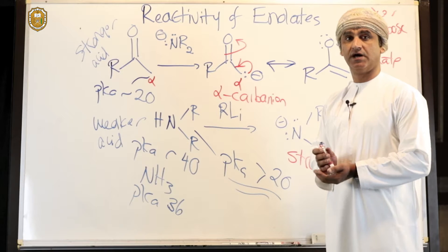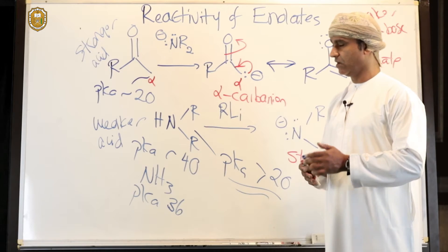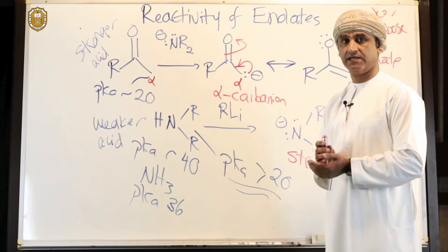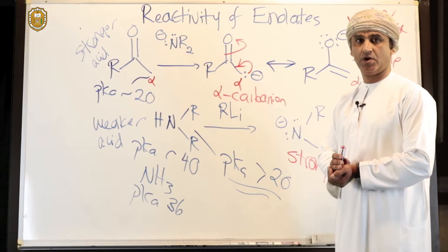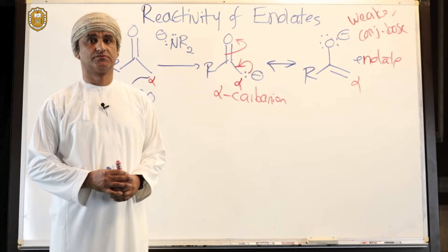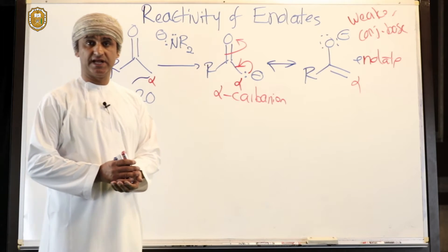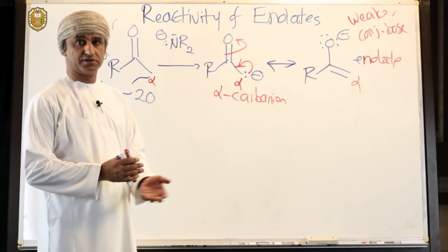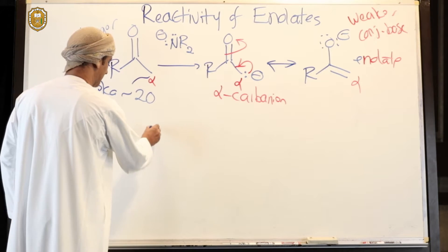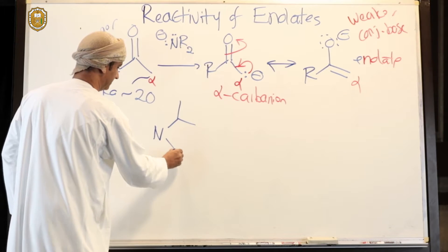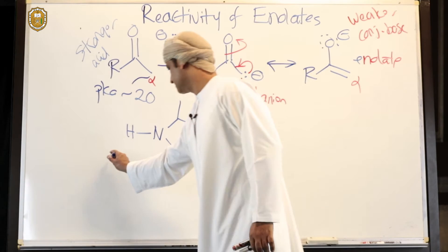Amide ions in general are suitable bases to deprotonate ketones and other carbonyl compounds with a similar or slightly higher pKa at the alpha position, forming the corresponding alpha carbanion or enolate. As an example, take diisopropylamine — the pKa of amines is about 40, and for diisopropylamine it is approximately 38.